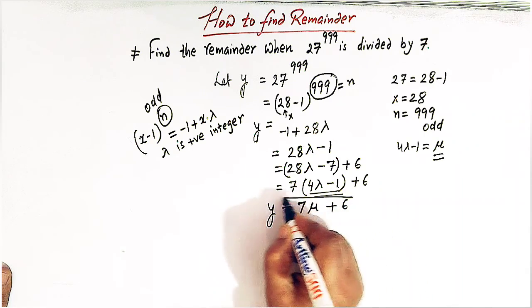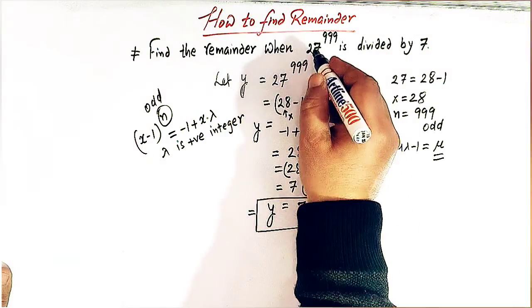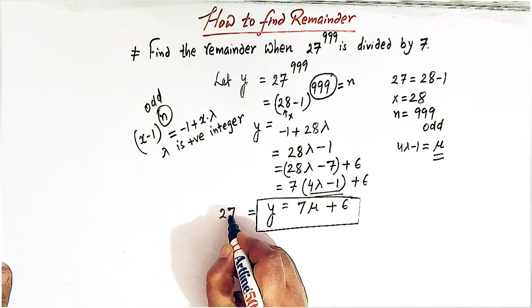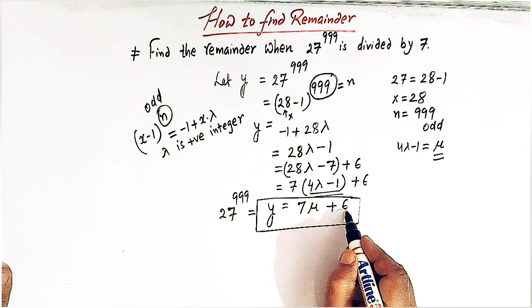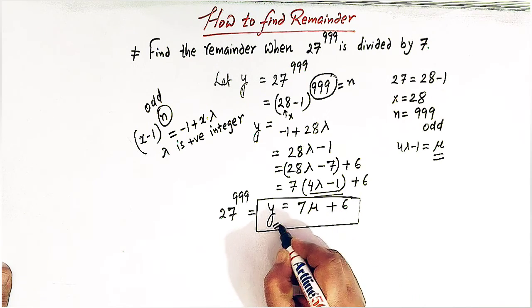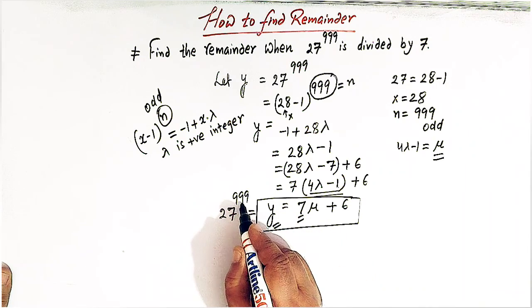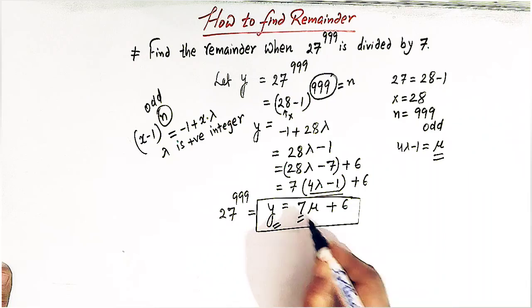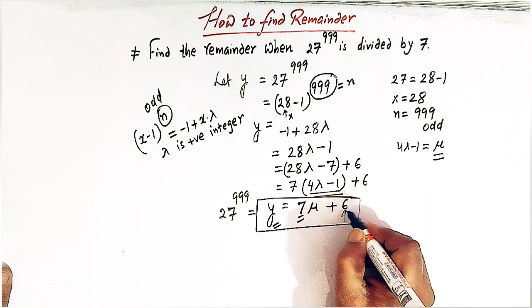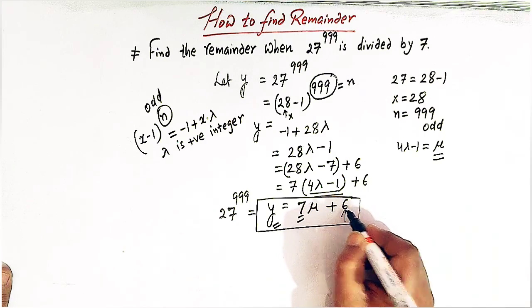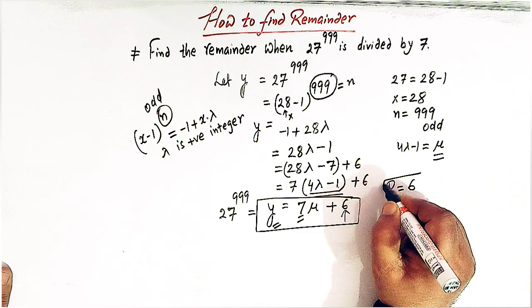Y is now equal to 7 mu plus 6 and y is 27 raised to 999. Now from this expression, we can see that when y is divided by 7, that is 27 raised to 999 is divided by 7, the remainder is 6. This term gives us the remainder. So the remainder is equal to 6.